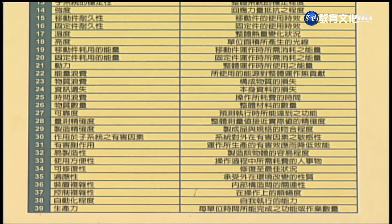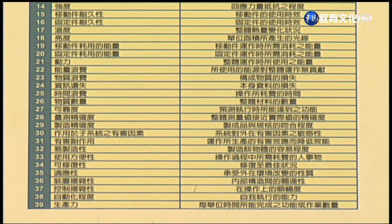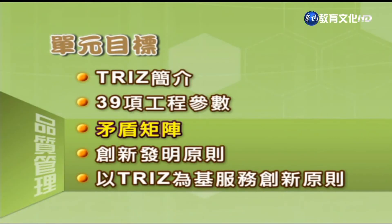抑制造性（制造该物体的容易程度）、使用方便性、可修复性（修复至最佳状态之容易性）以及在操作上的顺畅度。